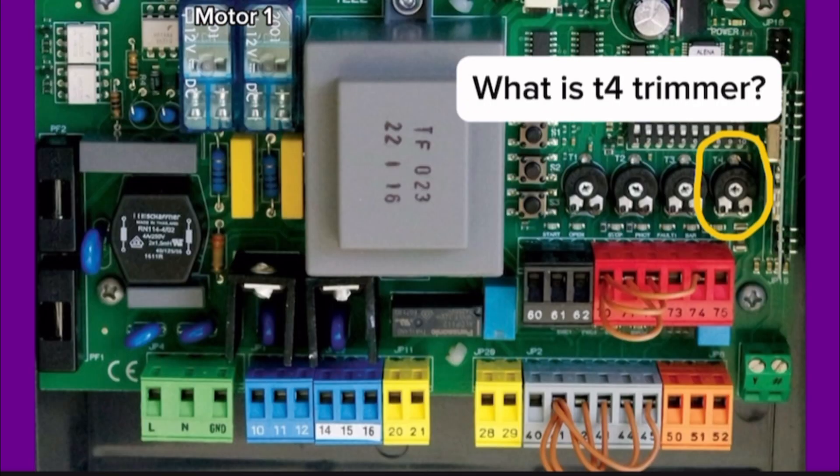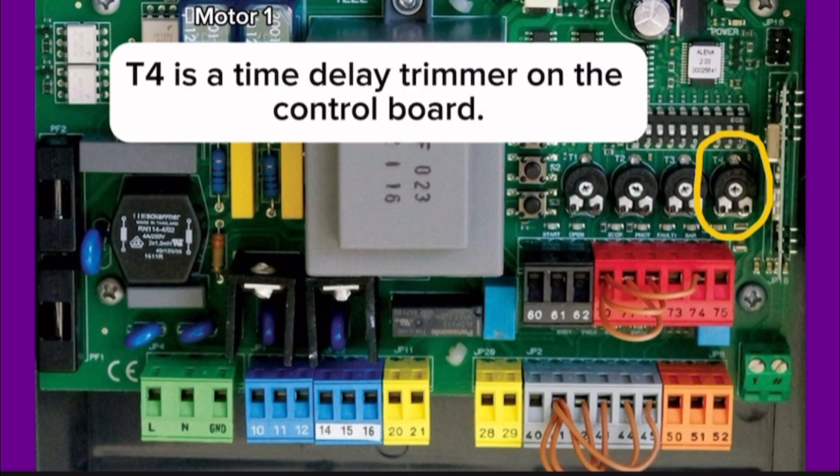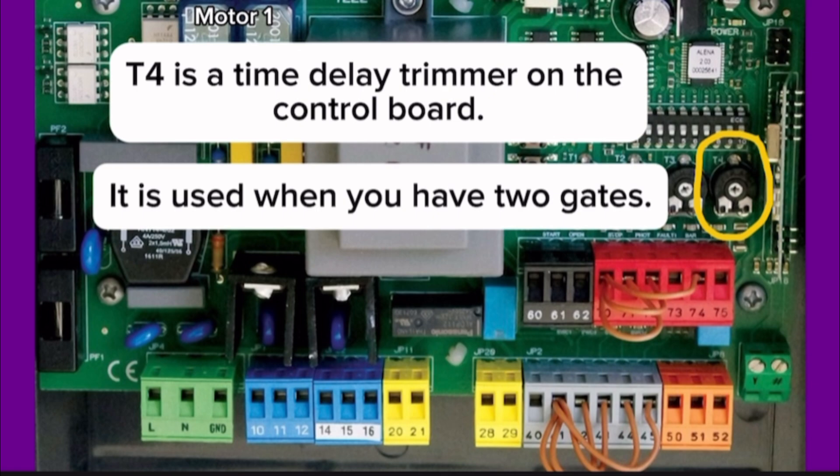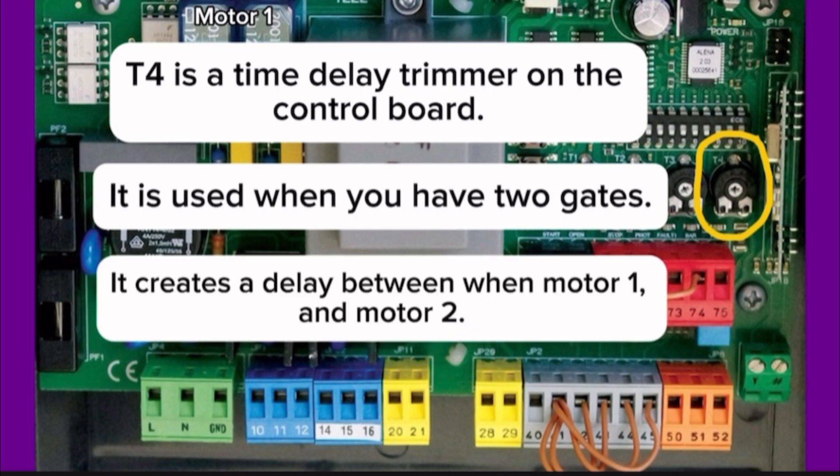What is T4 trimmer? T4 is a time delay trimmer on the control board. It is used when you have two gates. It creates a delay between motor 1 and motor 2.